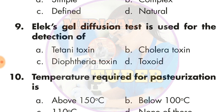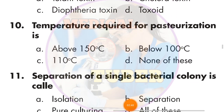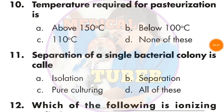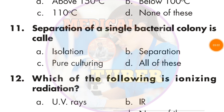Question number 10: The temperature required for pasteurization — the answer is B — below 100 degrees Celsius. Question number 11: Suppression of a single vector —